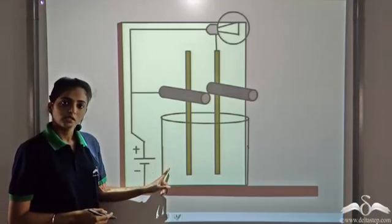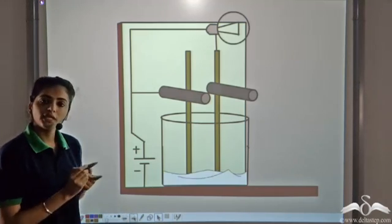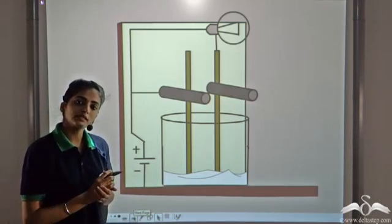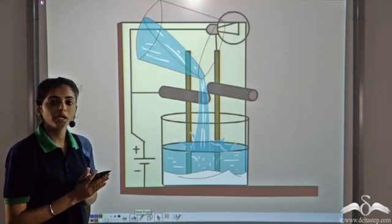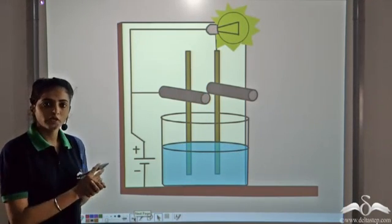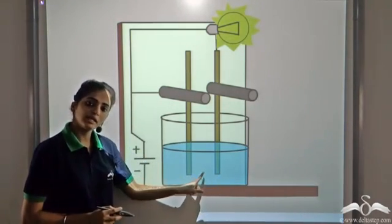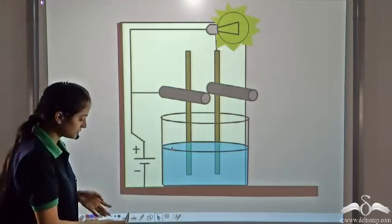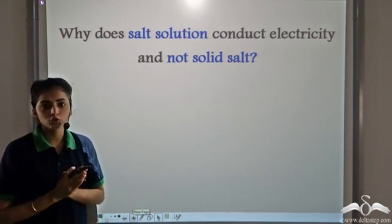Now let's take a beaker. When the beaker is empty, the bulb does not glow — the circuit is not complete. We add some solid salt in it; again the bulb does not glow. That means this salt is not conducting electricity. Now we add some water to this salt, that is, we prepare a salt solution — and what do we see? We see that the bulb glows. So when we make a salt solution, the bulb glows, meaning the salt solution is conducting electricity and completing the circuit.